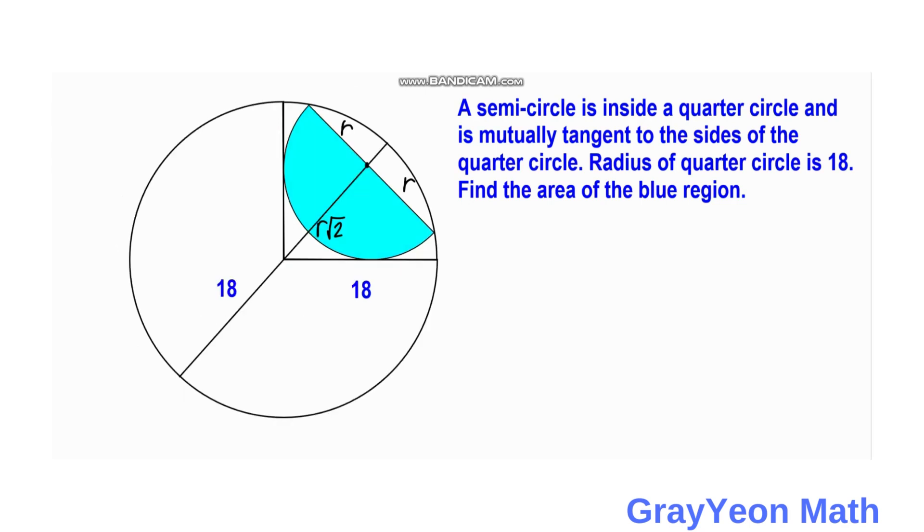So next is we get the value of this small segment here. And this small segment is actually the radius of this quarter circle minus R square root of 2, and that would be equal to 18 minus R square root of 2. Because the whole length of this radius of the quarter circle is 18. So we just need to subtract this R square root of 2.